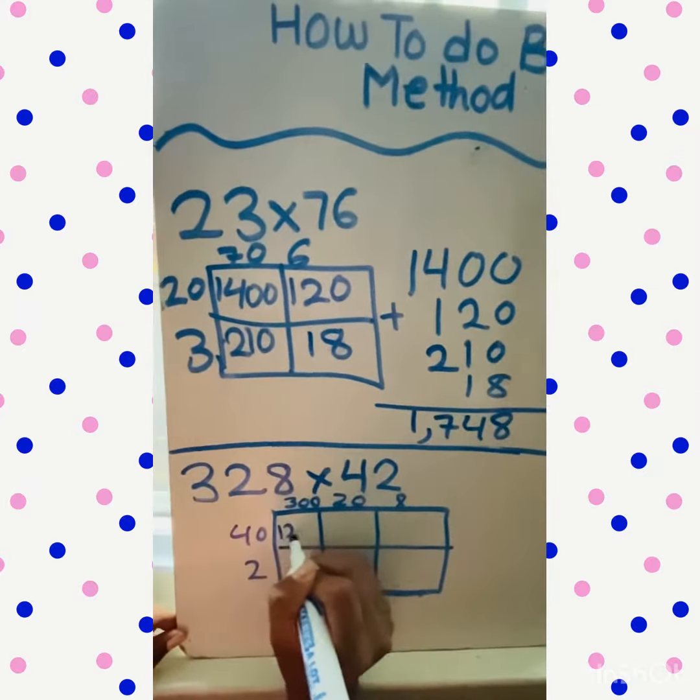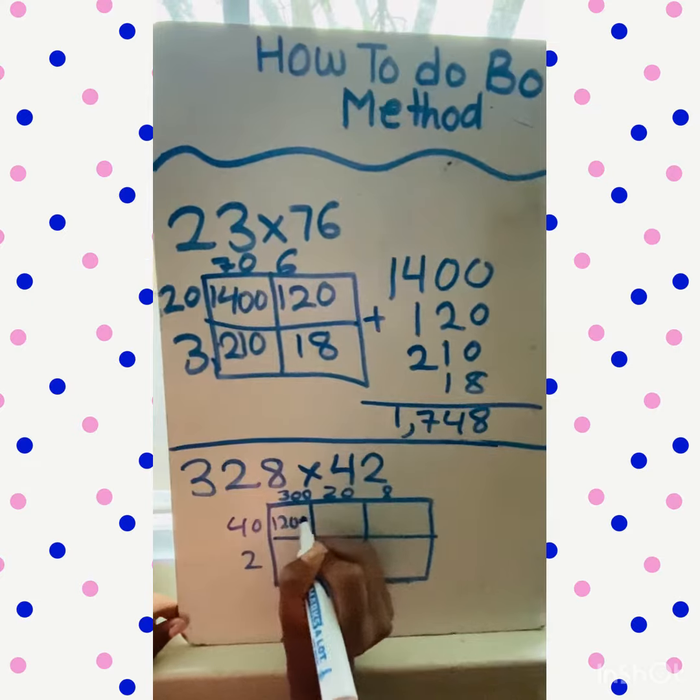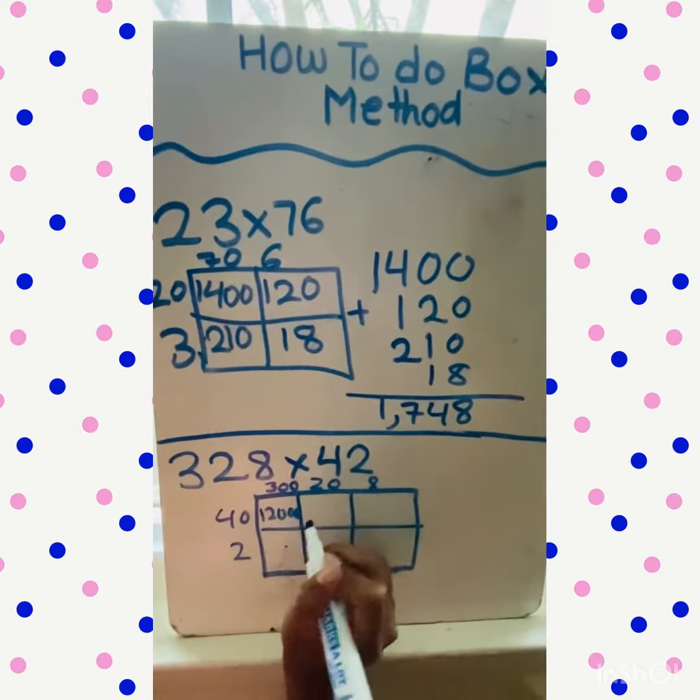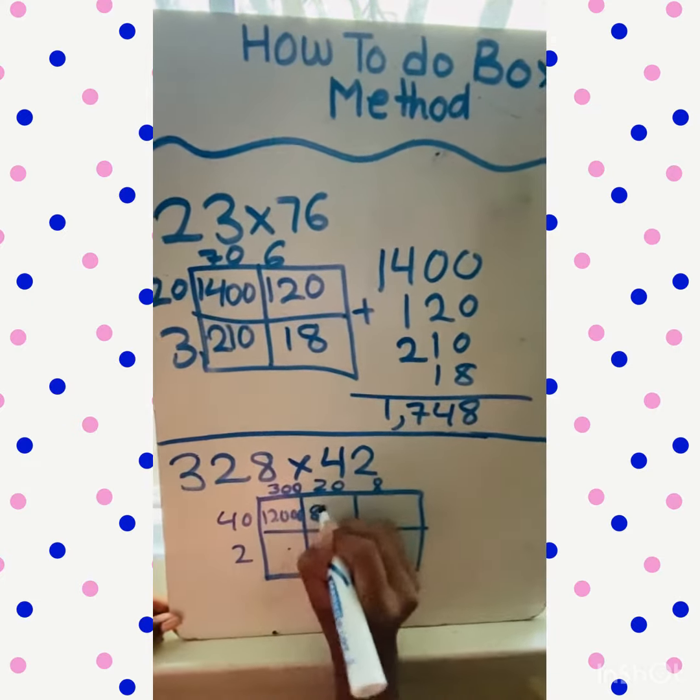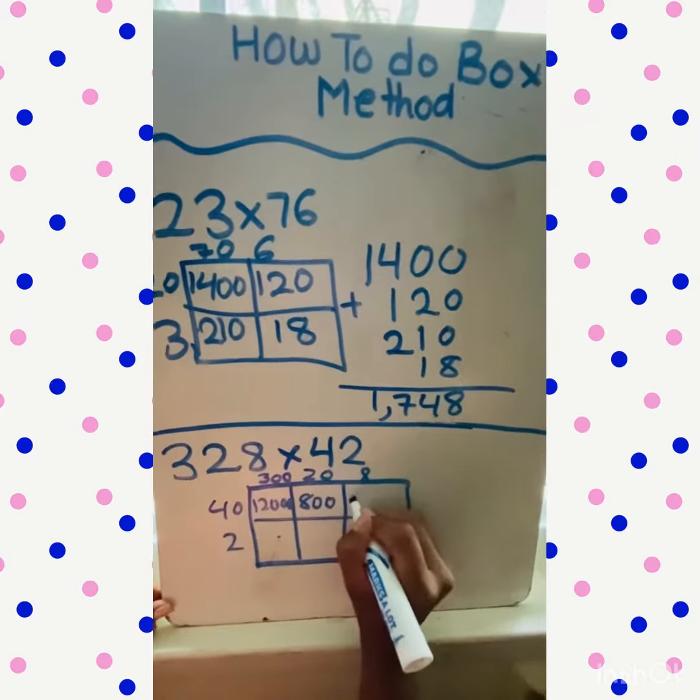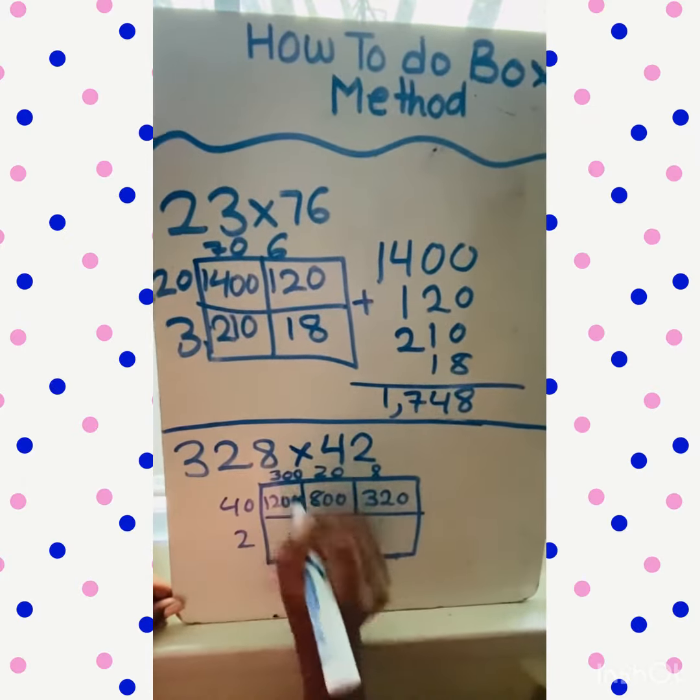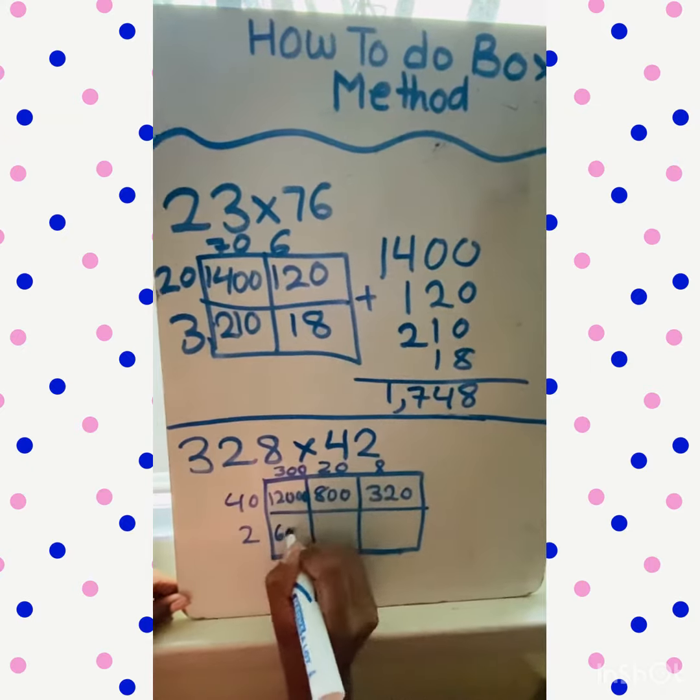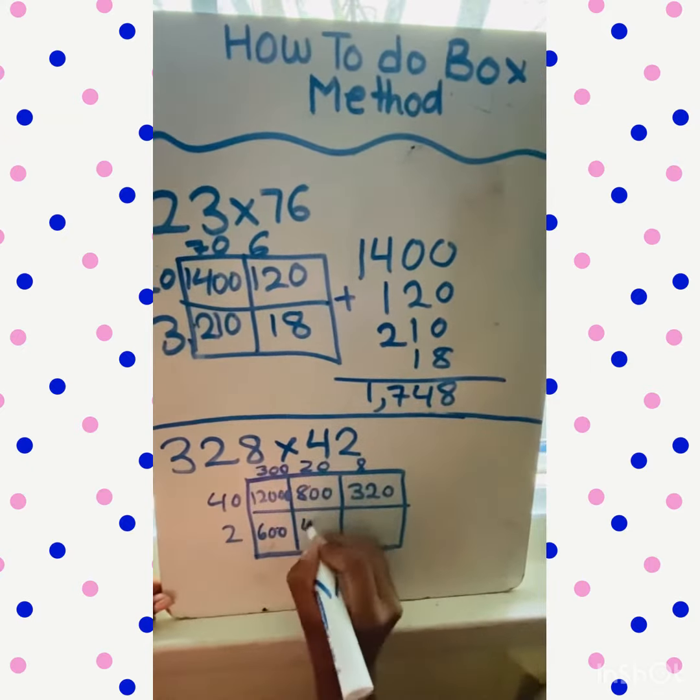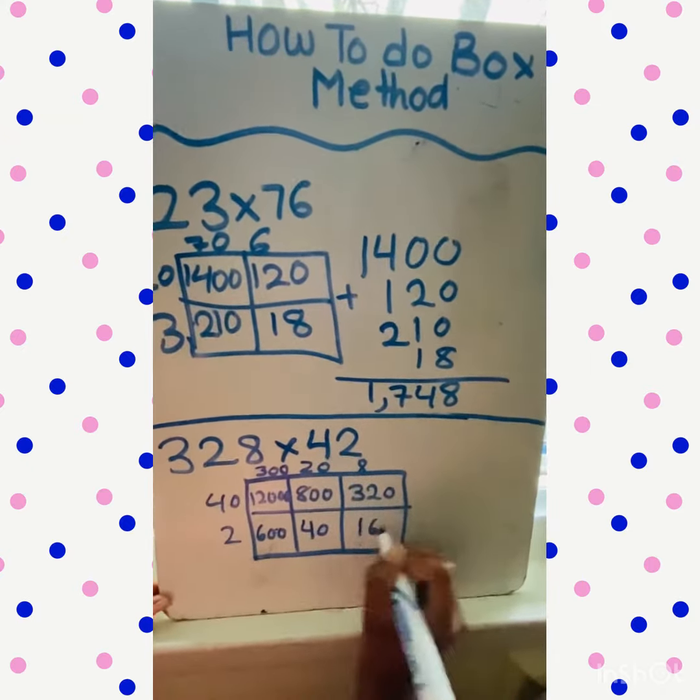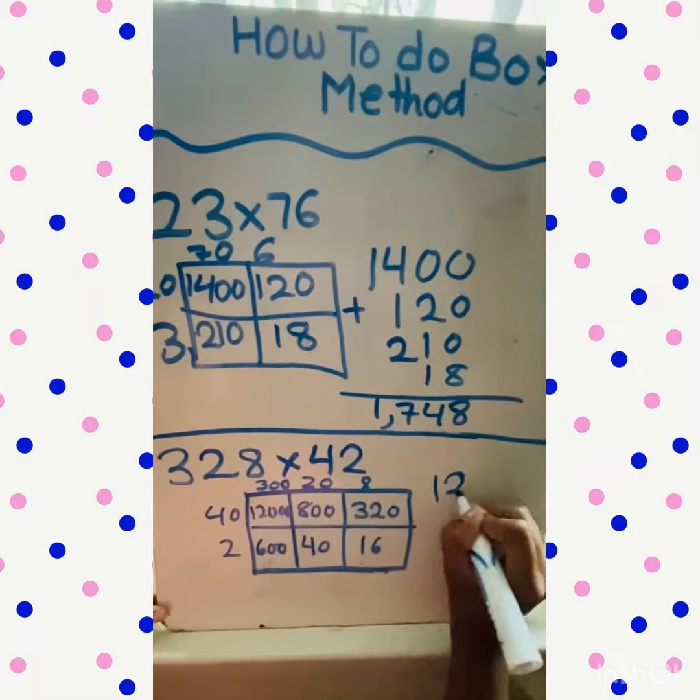And then 40 times 20, which is 800. And 300 times 2, which is 600. 20 times 2 is 40, and 8 times 2 is 16. Let's add them up and see.